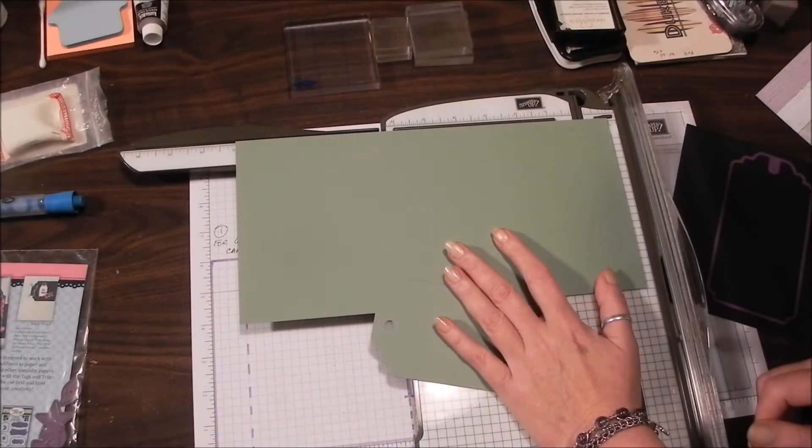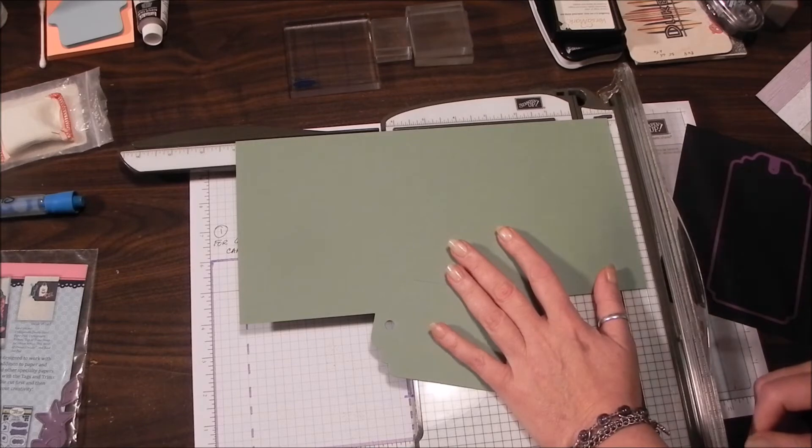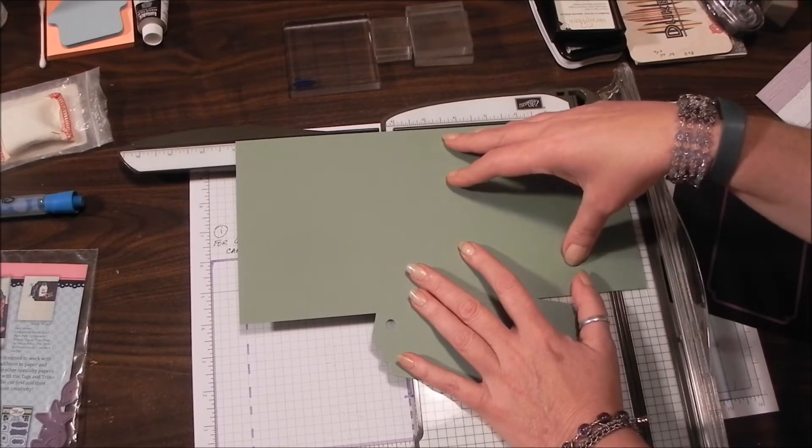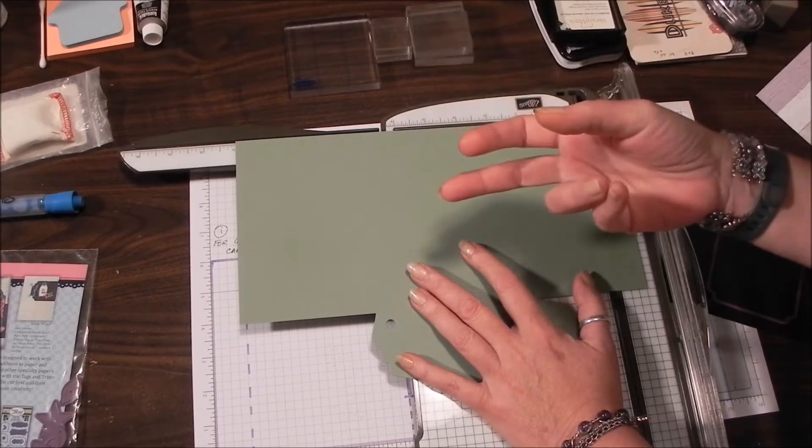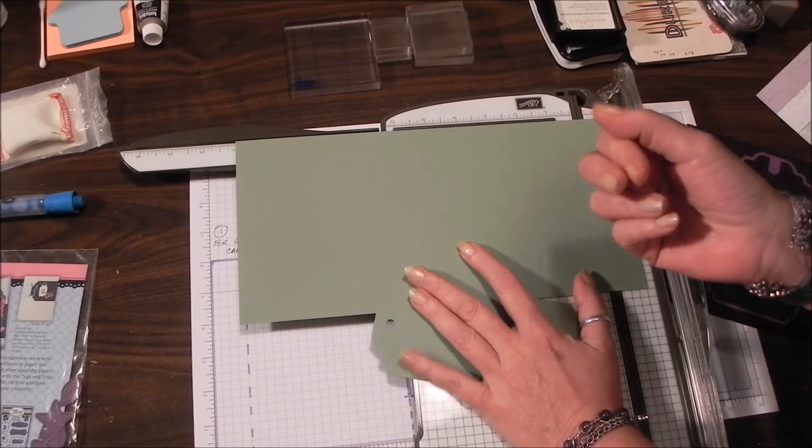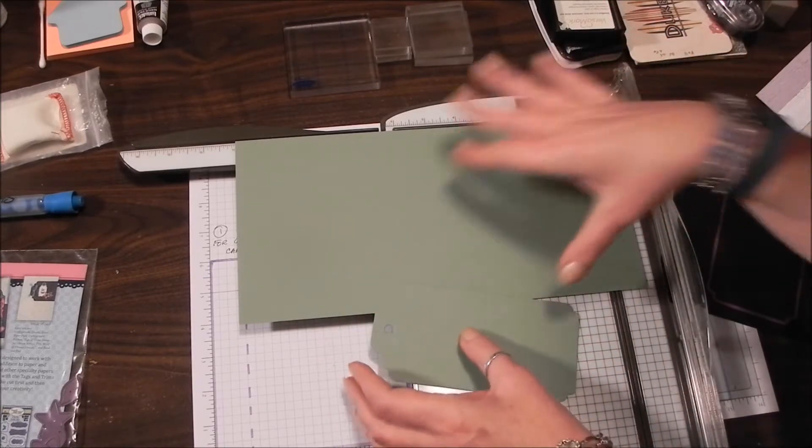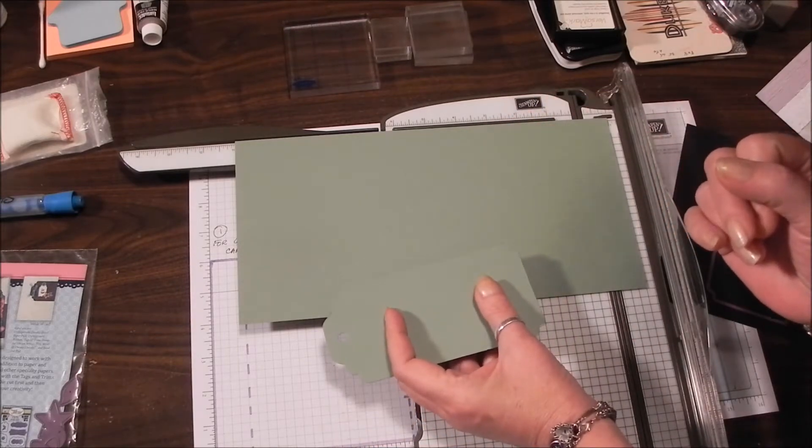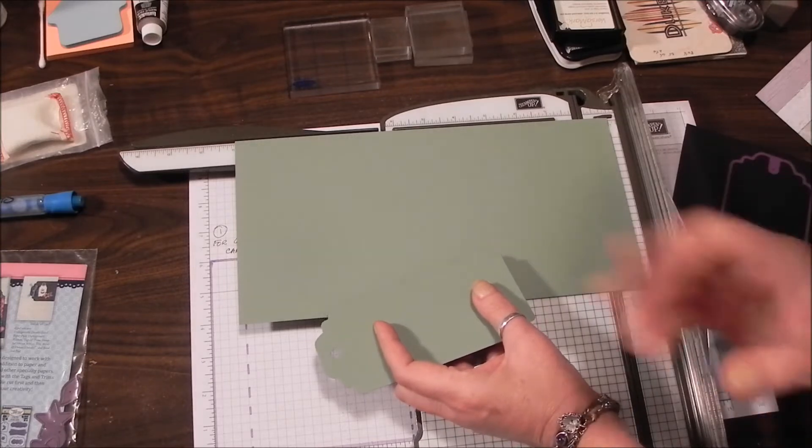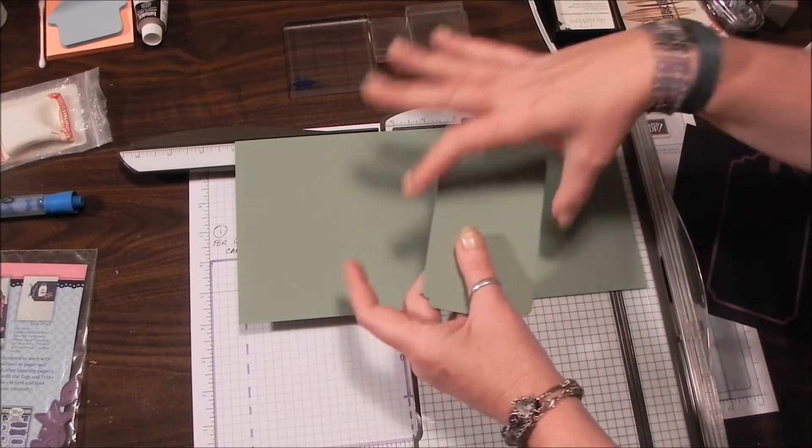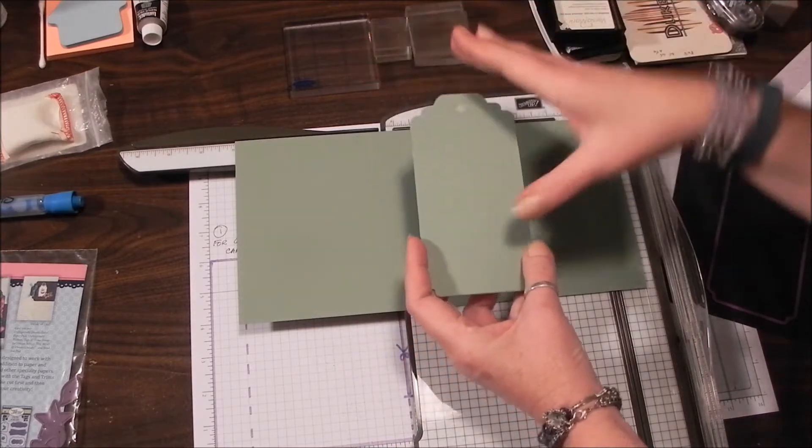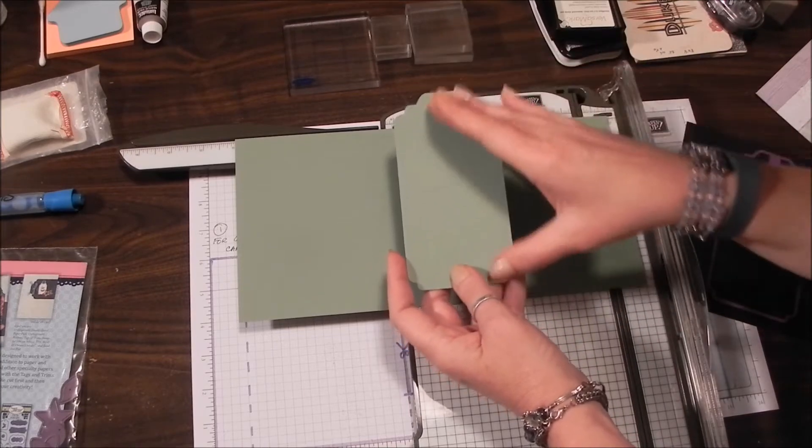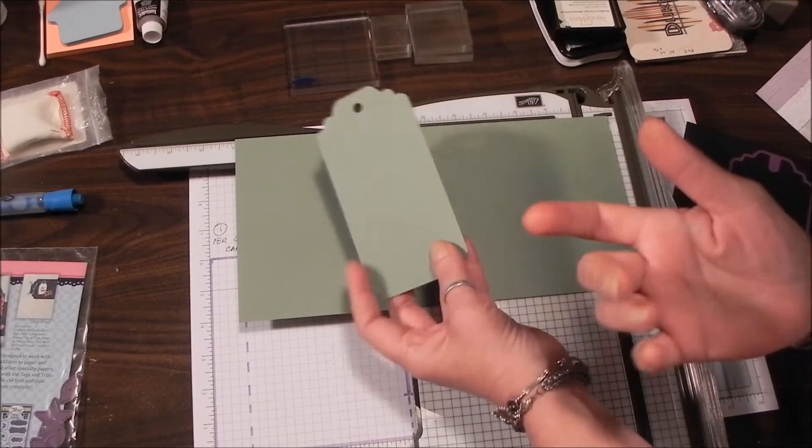Now in the structure for this first project, the finish size is four and a half by six inches, a landscape. You're going to need a base piece that's 11 by six inches. That's double your height, which is four and a half times two is nine, and then you want two inches for the fold under. The other piece you're going to need is your pop-up panel, and in this case it needs to be approximately three inches wide.